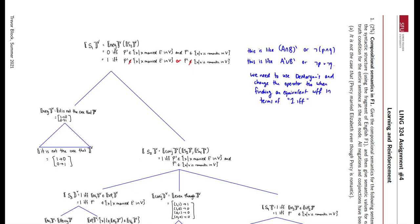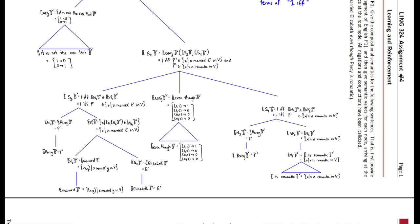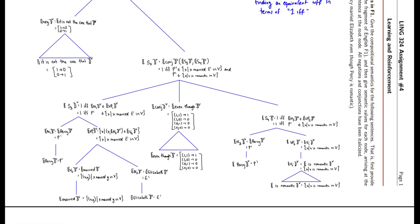Here's the tree for the first case of the ambiguous sentence, where 'it is not the case' is negating everything. What we're doing is building up the syntactic tree node by node. What's important is that every single terminal node has a value — so make sure every single word itself has some value: Percy, married, Elizabeth, is romantic, and Percy.